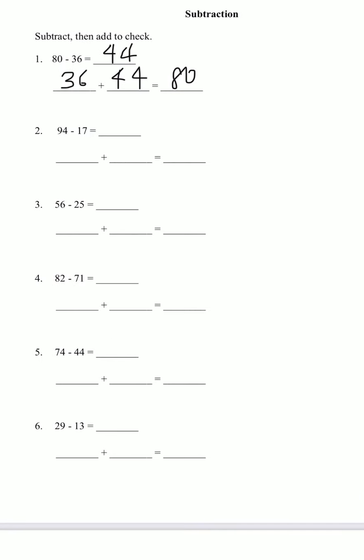Let's try number 3. We have 56 minus 25. 6 minus 5 is 1. And 5 minus 2 is 3. So we have 31. Let's try to check. 25 plus 31, and it needs to equal 56. So 25 plus 31. 5 plus 1 is 6. And 2 plus 3 is 5. So we have 56. And we got it right.